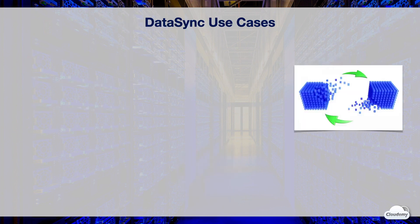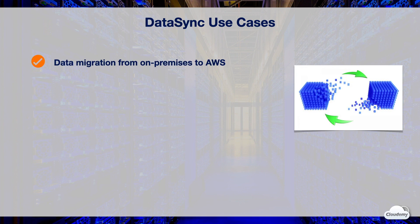You can use DataSync to automate data transfer in a variety of use cases. If you are planning to migrate a large amount of existing data from on-premises to AWS cloud, you can use DataSync to move active datasets rapidly into S3, EFS, or Amazon FSx for Windows File Server. DataSync includes automatic encryption and data integrity validation to make sure that your data is secure and intact.